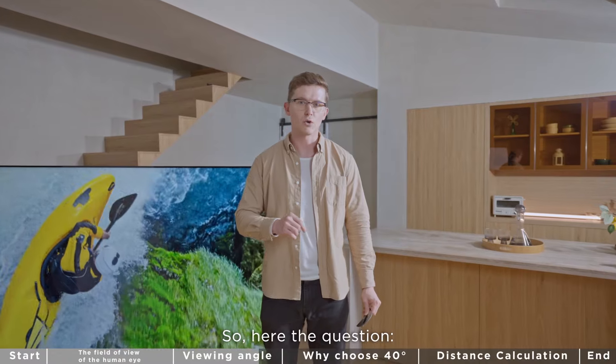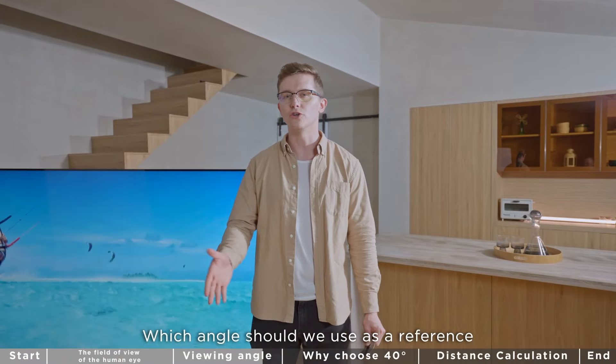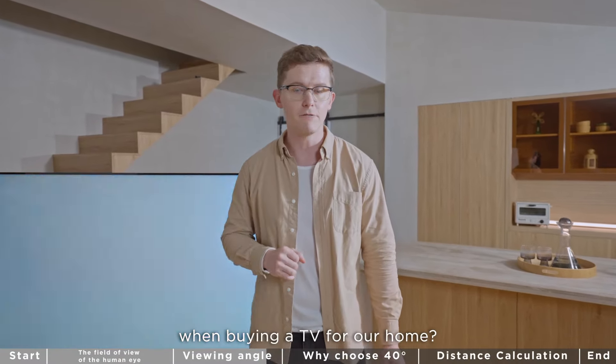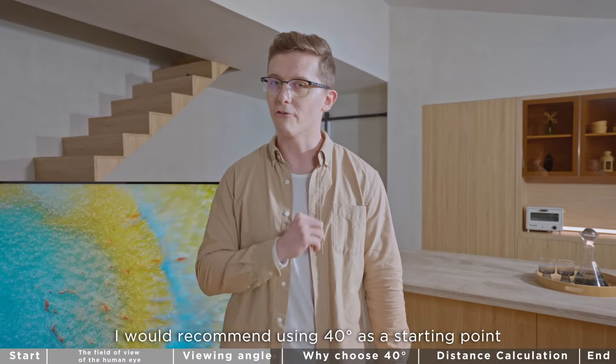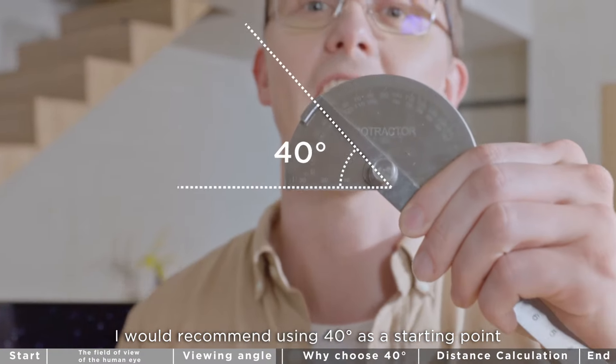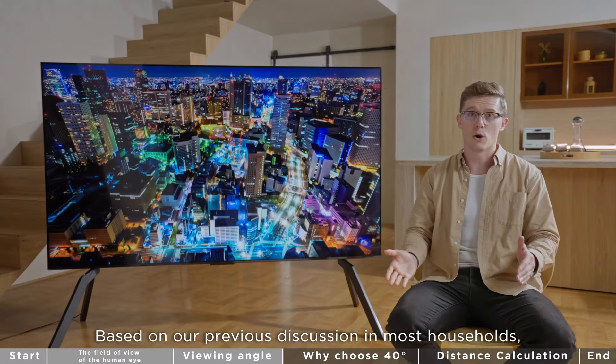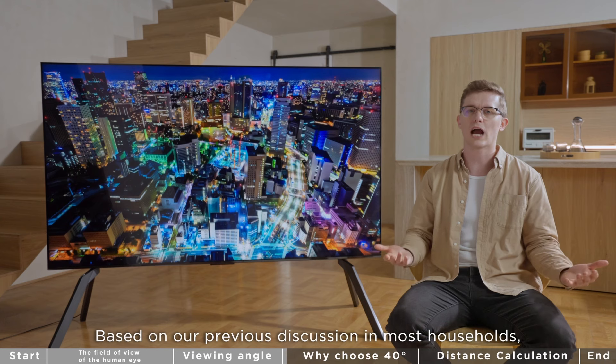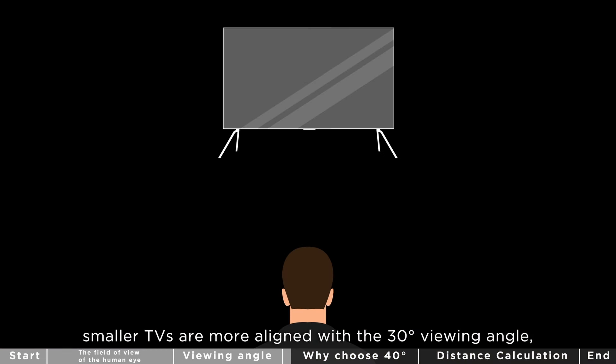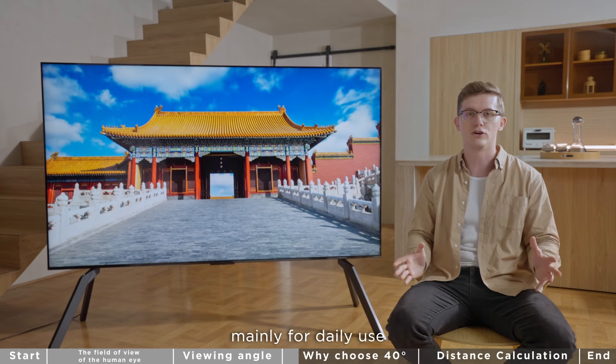So here's the question: Which angle should we use as a reference when buying a TV for our home? I recommend using 40 degrees as a starting point. Based on our previous discussion, in most households smaller TVs are more aligned with the 30 degree viewing angle, mainly for daily use.